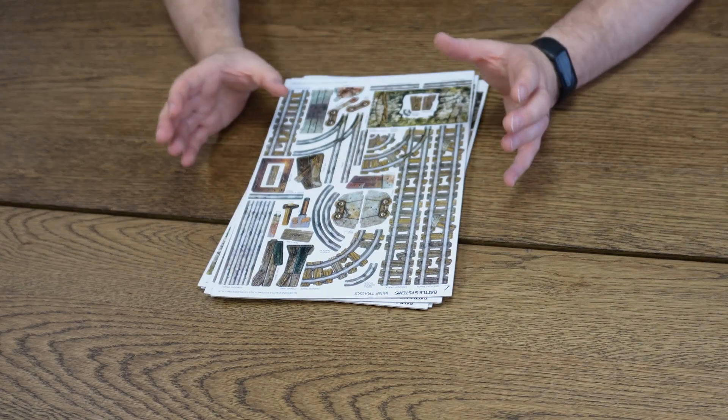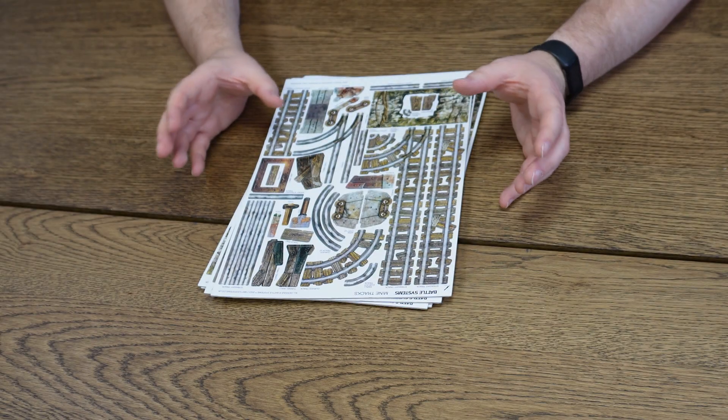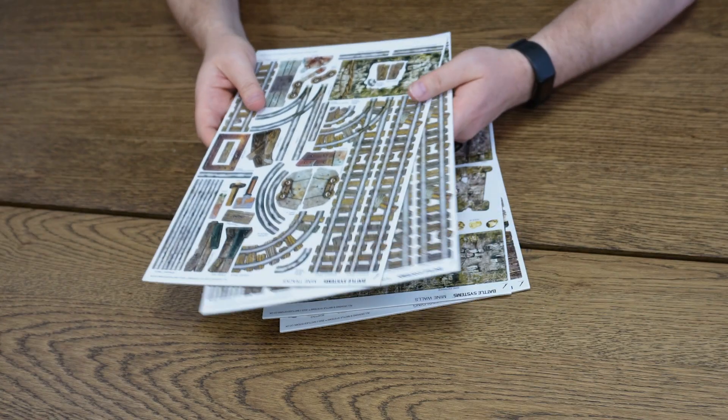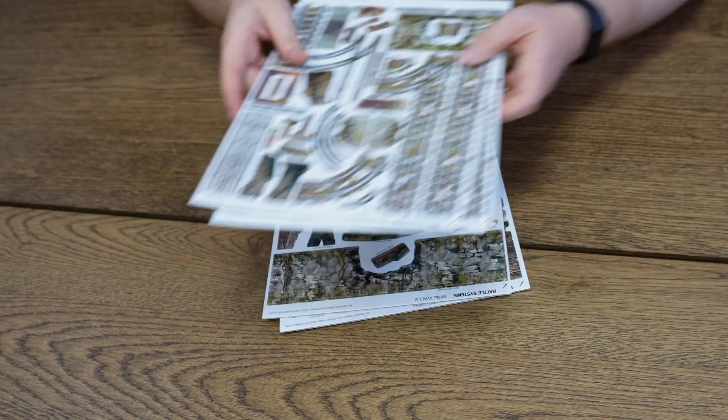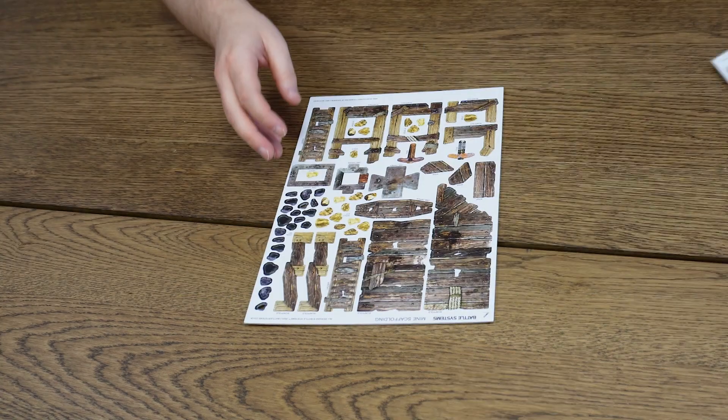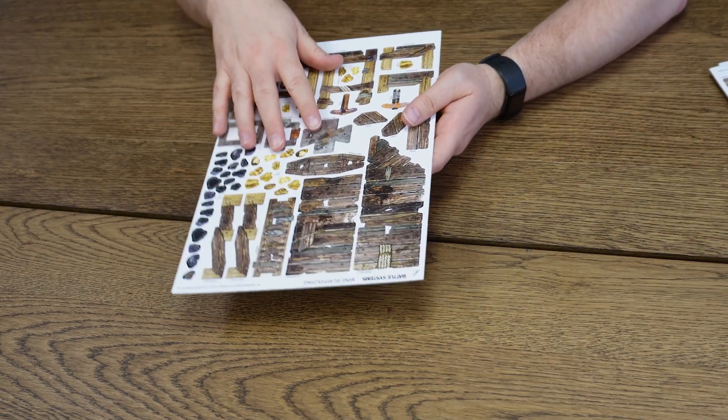This set is ideal for fantasy settings and works beautifully with our dungeon terrain, but it could also double up in a more modern setting, perhaps as a location for some treasure hunters or a hideout from the apocalypse for your survivors to hole up in. Either way, it's going to create a very atmospheric backdrop for your games. So this set comes with two sets of mine tracks, the sheet of mine walls and a sheet of mine scaffolding.